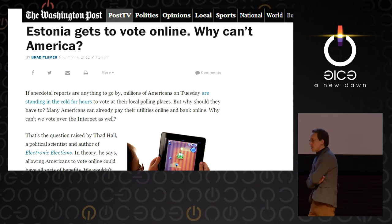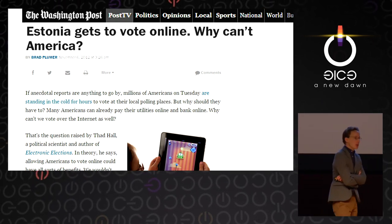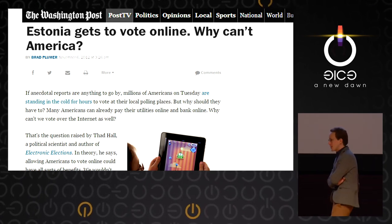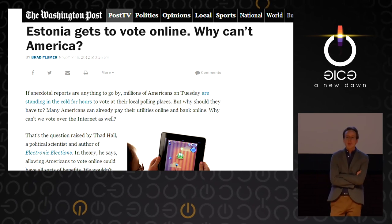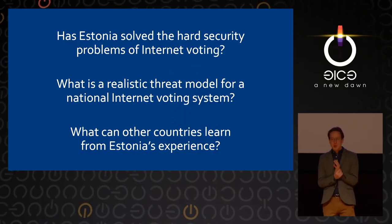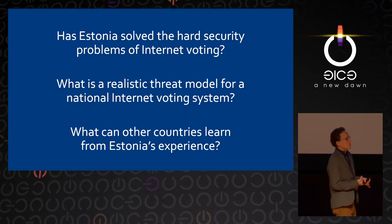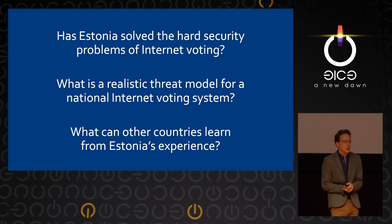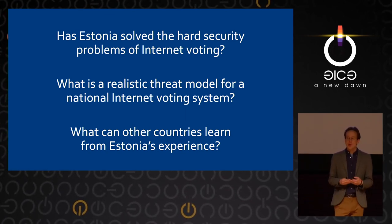Whether the Estonian system is secure is a question that had not been adequately answered. There was no independent international study that examined in detail the technology and its security implications. Because of this, many other countries — including my own — had people looking at Estonia and saying, 'look, they're voting online, why can't we do that?' So I wanted to know: has Estonia actually solved the problem of voting online securely? Have they defined their system in a way that answers realistic threats that major countries face? And what can other countries learn from Estonia's example?